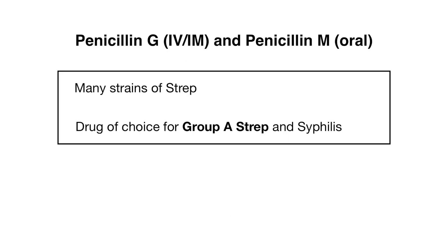Let's start with penicillin G and penicillin V, which are different in terms of their route of administration. These antibiotics cover many strains of strep and are actually the drug of choice for group A strep and interestingly for syphilis. Fun fact: penicillin was the first antibiotic to be discovered, discovered by Alexander Fleming. Because penicillin has been around for some time, many organisms have become resistant to it, so you will not often see it used in a clinical setting except to cover group A strep and syphilis.